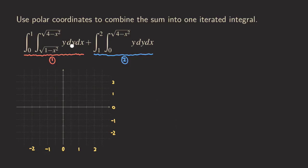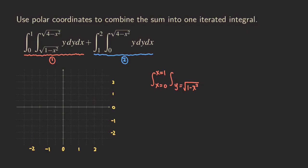Let's look at the first integral. I'll start by rewriting the equations for the limits so that we can actually see the lines or curves more easily. Instead of leaving the limits at zero and one, I'm writing X equals zero and X equals one. So we have Y equals the square root of one minus X squared, and the other one is Y equals the square root of four minus X squared. You can see that these are really parts of circles.